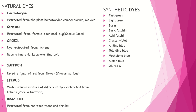Synthetic dyes are chemical substances. Examples include fast green, light green, eosin, basic fuchsin, acid fuchsin, crystal violet, aniline blue, toluidine blue, methylene blue, alcian blue, and oil red O. These are some examples of synthetic dyes.